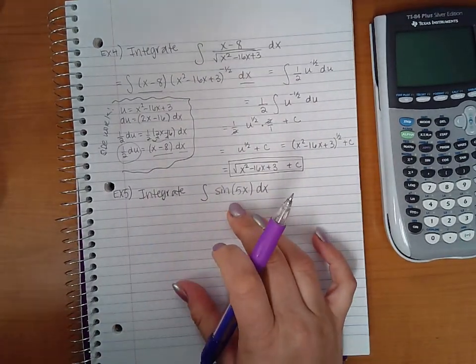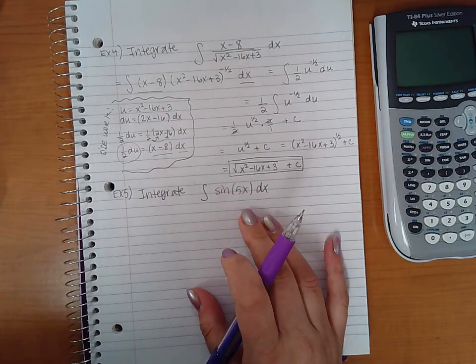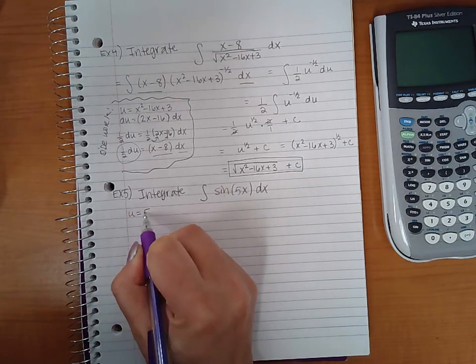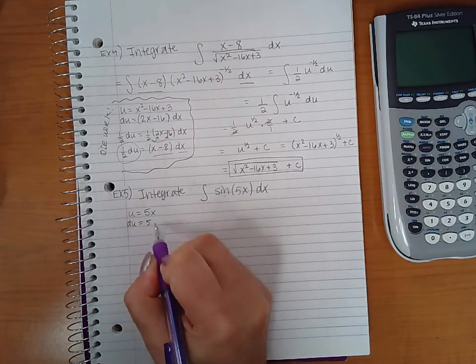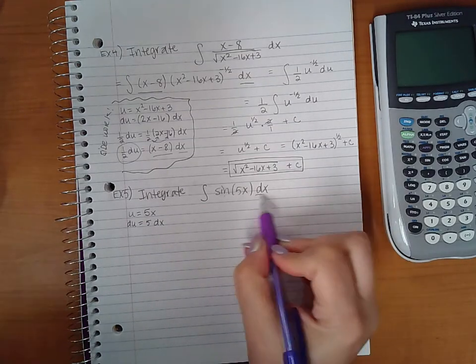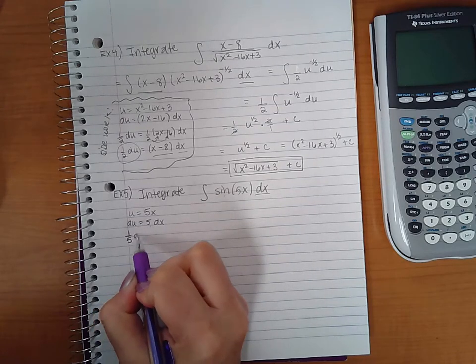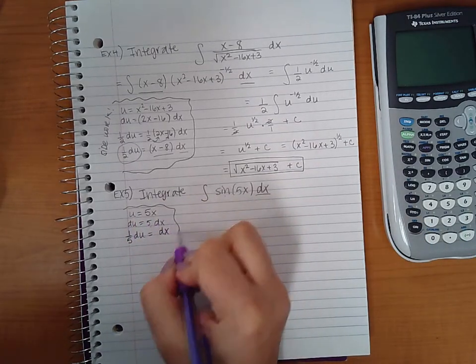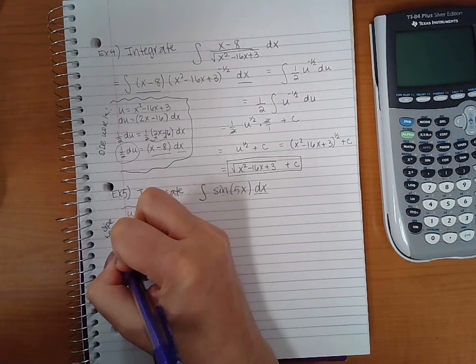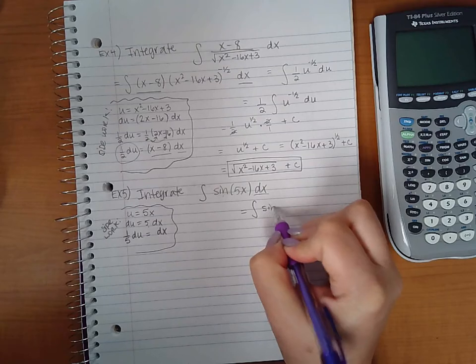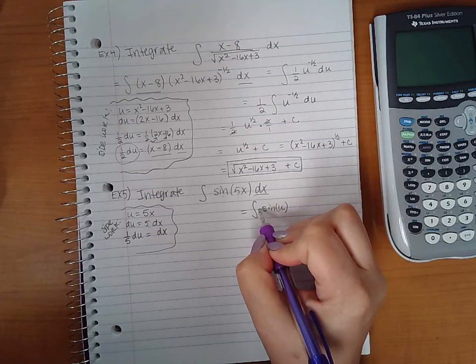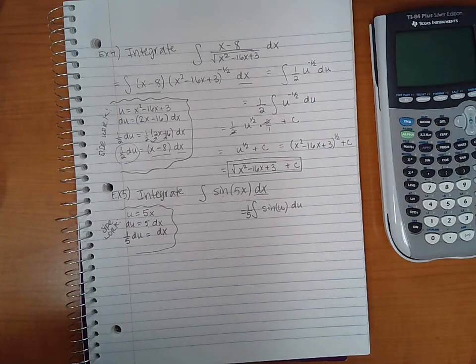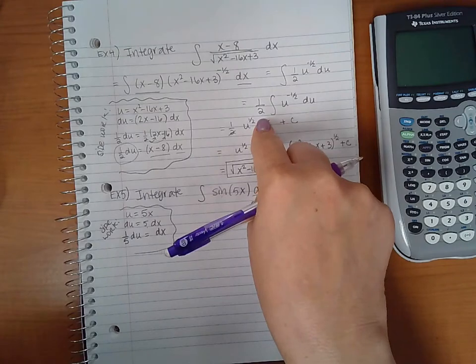Example five: this one's a little bit easier to identify. Sine is on the outside and 5x is on the inside, so u equals 5x. Then du would just be 5 dx. I have the dx but I don't have the 5, so if I multiply both sides by one fifth, that'll cancel the 5 and I'll just have dx. This expression will become sine of u, and I could put the one fifth here or put it all the way to the outside.